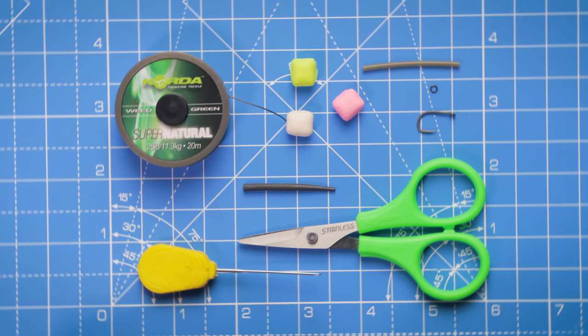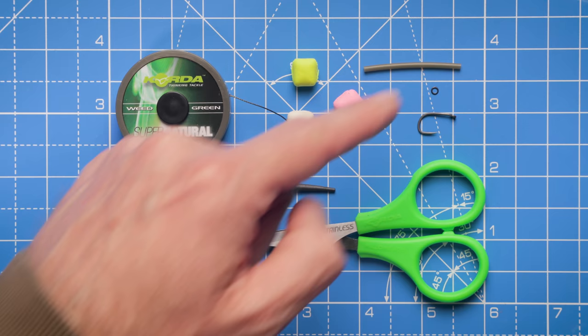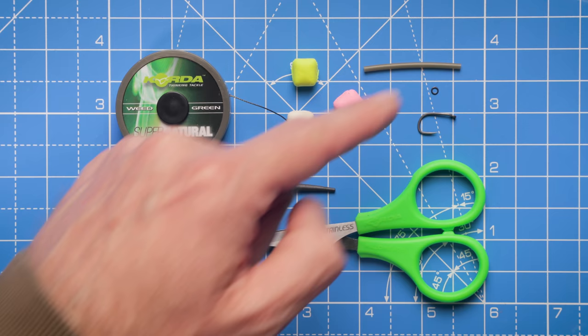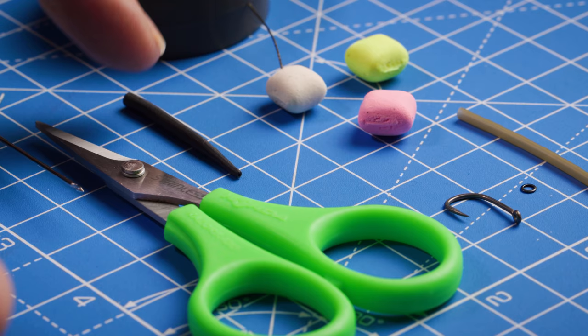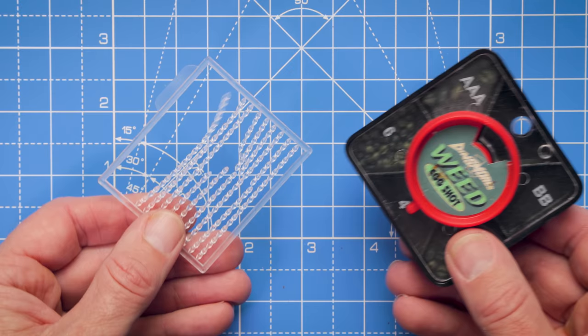To tie this rig, I'm going to use a soft uncoated braid, a pop-up version of the quads, a little bit of shrink tube to make a kicker, a little micro ring swivel so the hook bait can be blown back, and a size 8 wide gape hook. I've got an anti-tangle sleeve, and of course we just need a pair of scissors and a baiting needle for adding our hook bait. Don't forget, you're also going to need a bait stop and some split shot to counterbalance that pop-up.